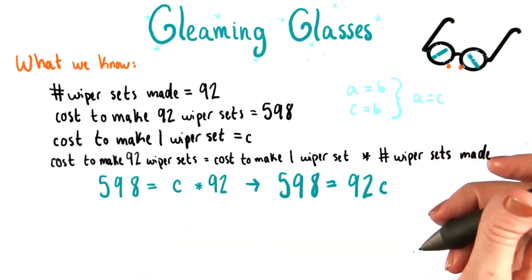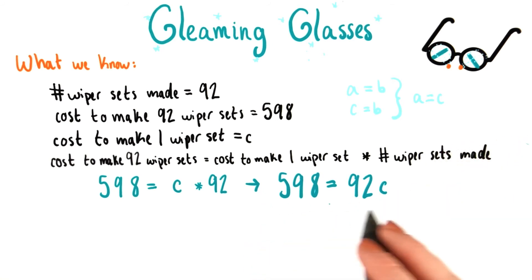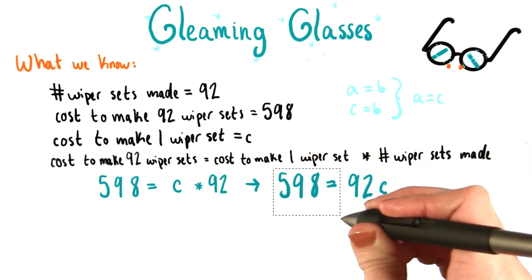So look at that. After a lot of hard work, we finally have a lovely concise equation. 598 equals 92c. I think I'd put a nice little box around that.